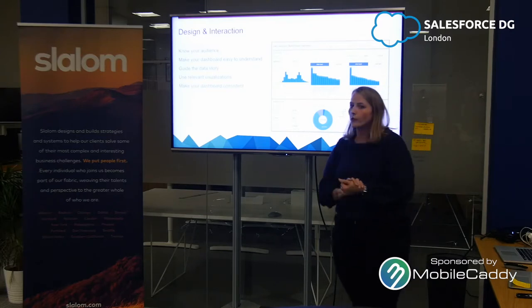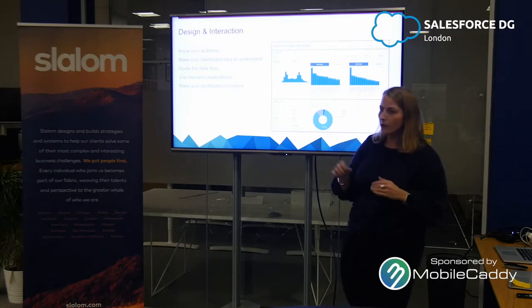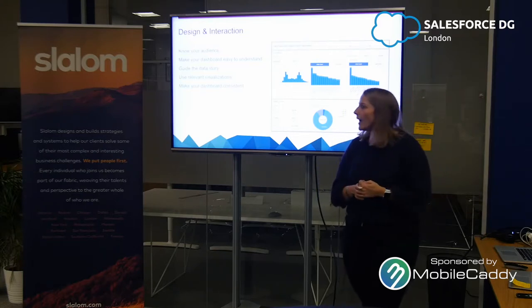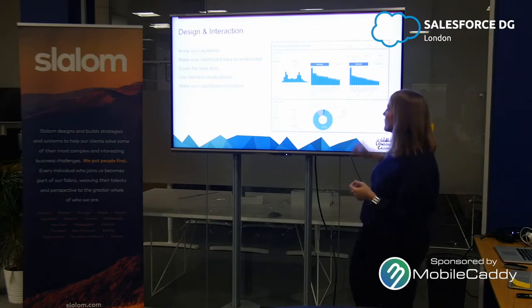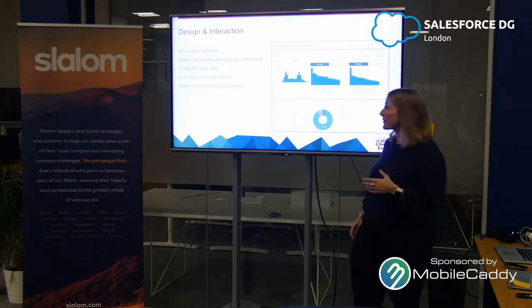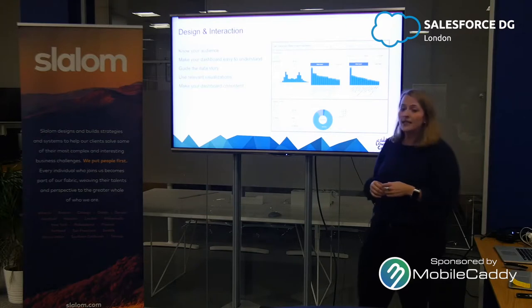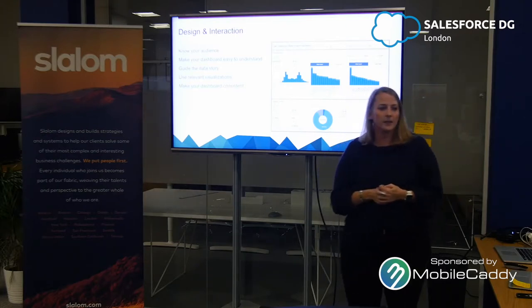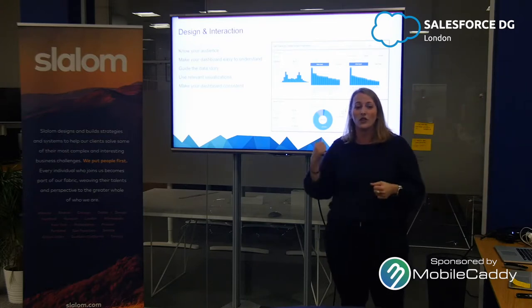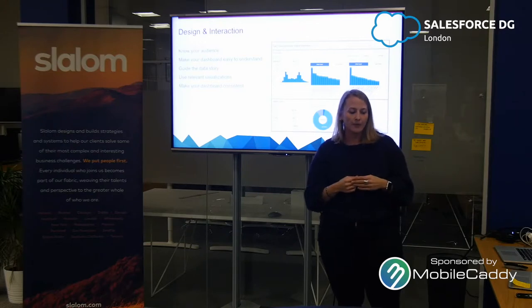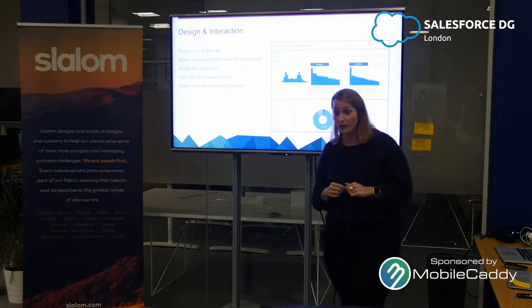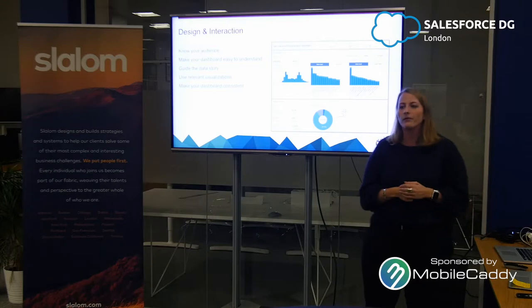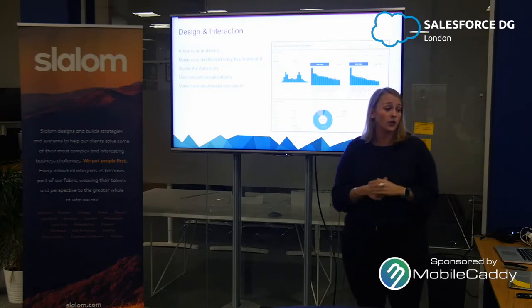The final guideline is to make sure your dashboard is consistent. If you have date selections in the top right corner, keep them there. If you always have key metrics on the left side, keep them there as well. We're all creatures of habit — when we get used to something, we just do it without thinking. Think about when Lightning was introduced; changing the design triggers that same confused feeling in your users.